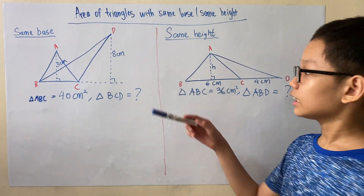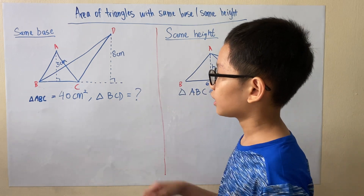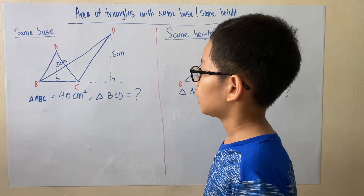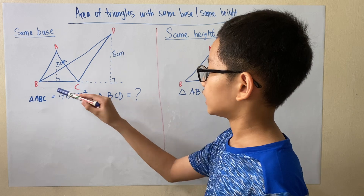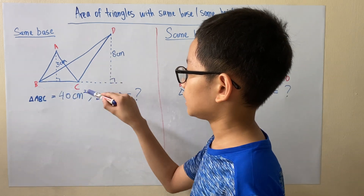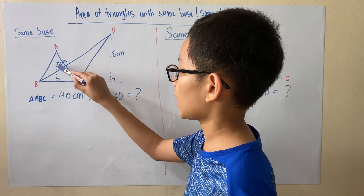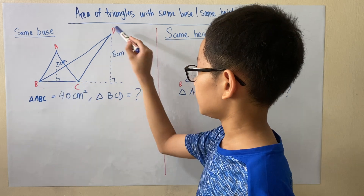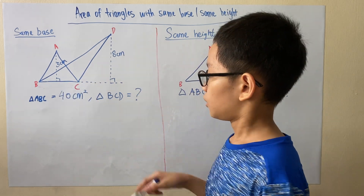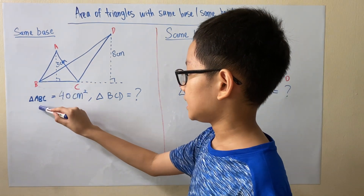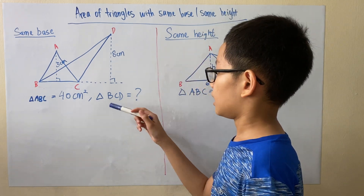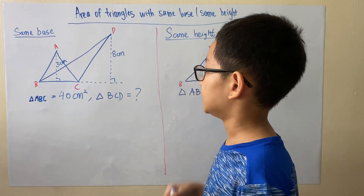Over here, let's look at the diagram where we have triangle ABC and triangle BCD. Both of them have the same base which is BC, and triangle ABC has a height of 5 cm while triangle BCD has a height of 8 cm. We know that the area of triangle ABC is 40 cm² and we want to find out the area of triangle BCD.